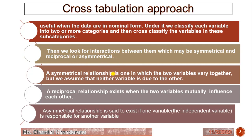A symmetrical relationship is one in which two variables vary together but neither variable is due to the other — both vary together but are not dependent on each other. A reciprocal relationship exists when the two variables mutually influence each other. An asymmetrical relationship exists when one variable, the independent variable, is responsible for another variable — one is dependent on the other.